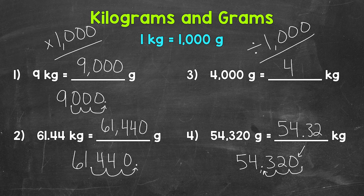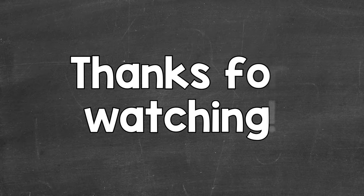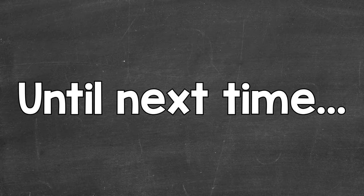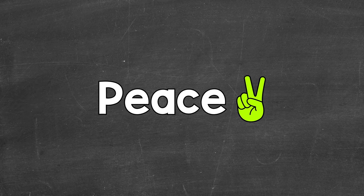So there you have it — that's how to convert between kilograms and grams. When we go from kilograms to grams, we multiply by one thousand and move the decimal three times to the right. When we go from grams to kilograms, we divide by one thousand and move the decimal three times to the left. I hope that helped. Thanks so much for watching. Until next time, peace.